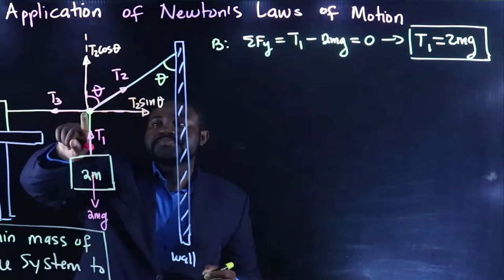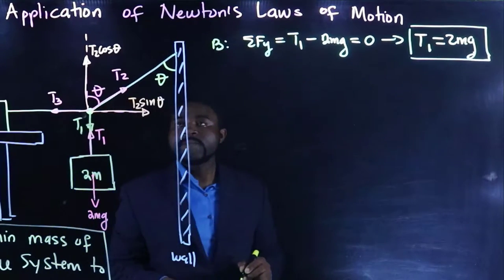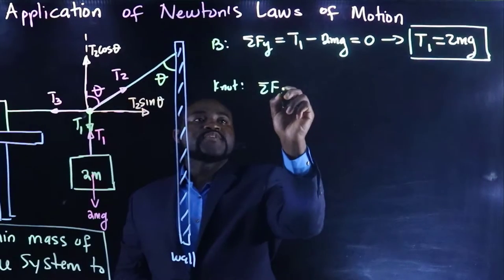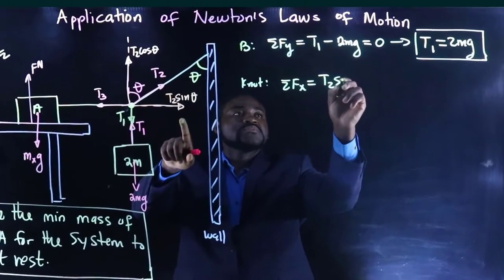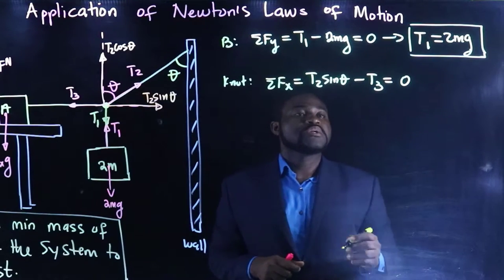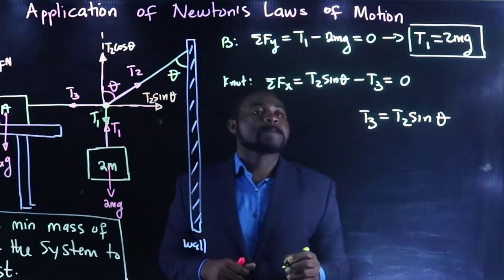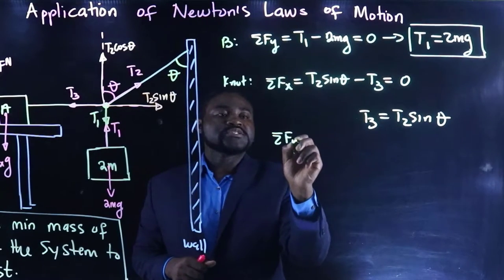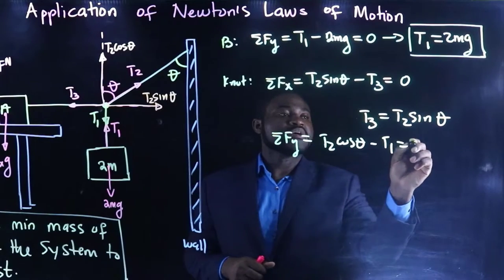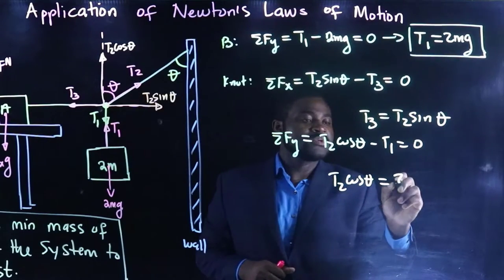Let's handle this knot. There is also a tension here, T1. So we know that for the knot, the summation of F in the x direction, you have T2 cosine theta minus T2 sine theta minus T3 will be equal to 0. This means that T3 is equal to T2 cosine theta minus T1 equal to 0. This means that T2 cosine theta will be equal to 2MG.